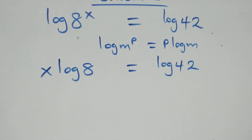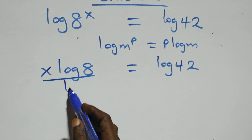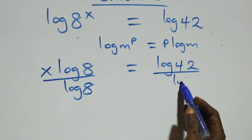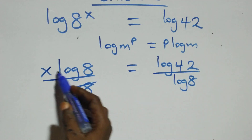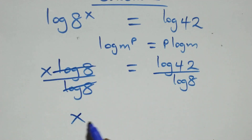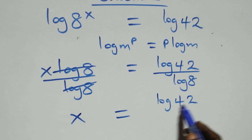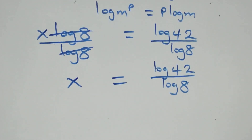The next step: we divide both sides by log8. Log8 cancels on the left, and we have x equals log42 over log8.